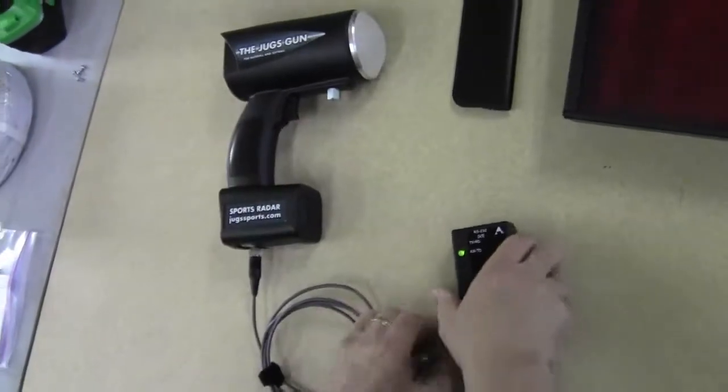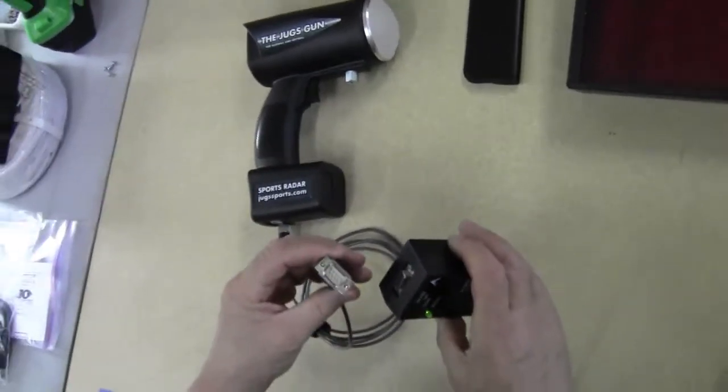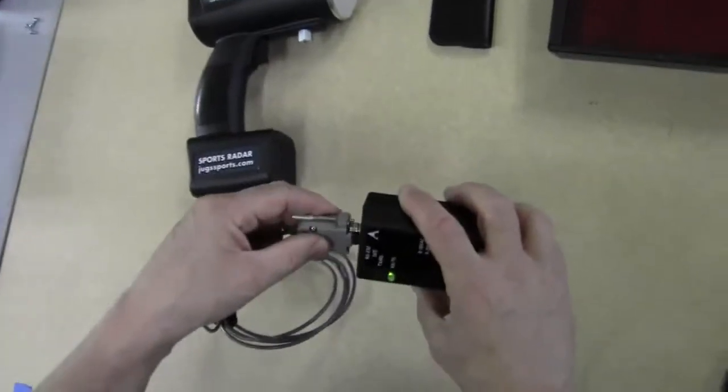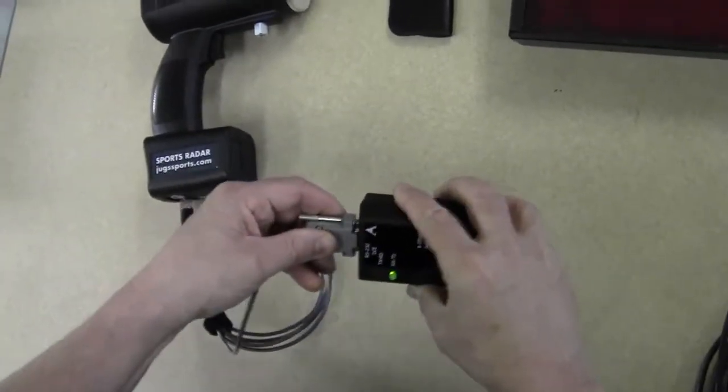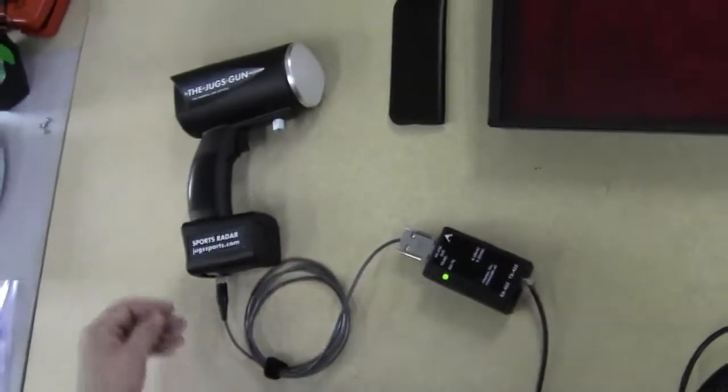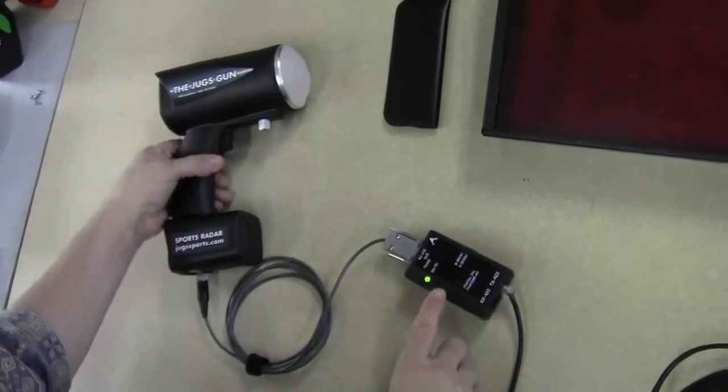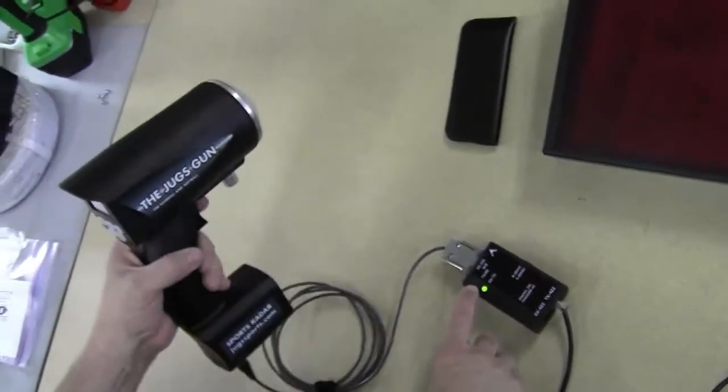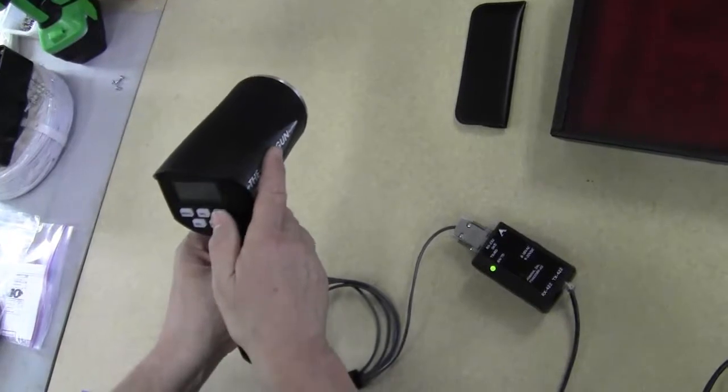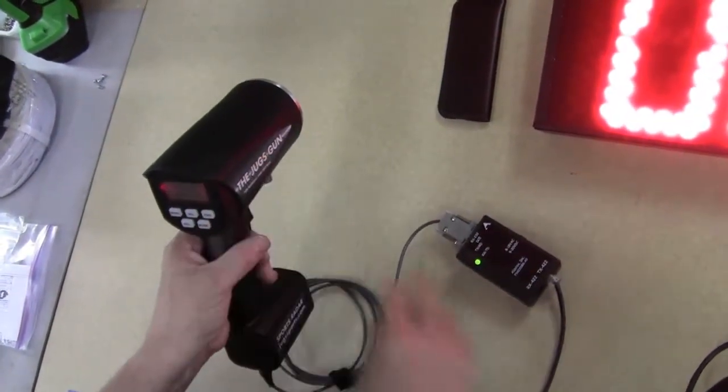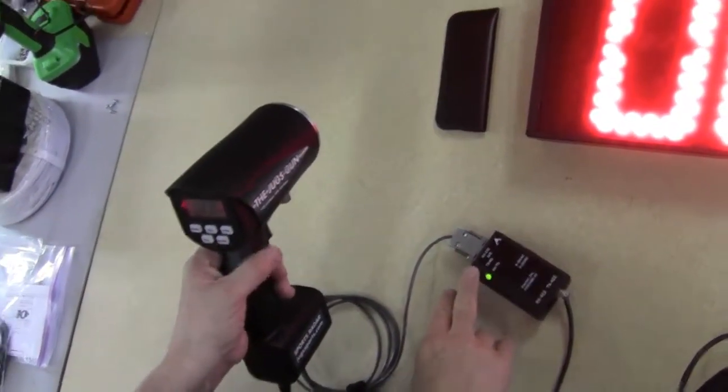Then we're going to take the other end and plug it into the RS232 connector on the PS422 DB9. Now it's ready to go. Now we're going to watch this LED right here in a minute. So I'm going to turn the power on. You'll notice that the LED flashed.